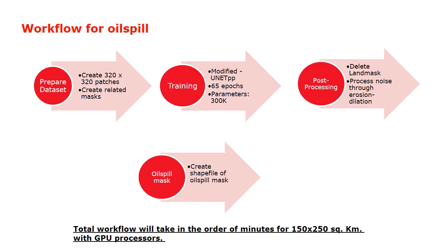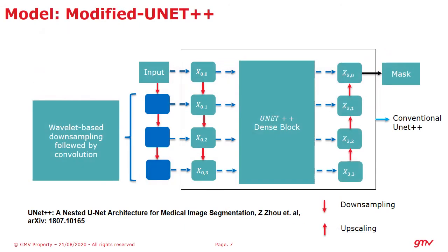Here we present our workflow for oil spill detection. The important part is that our deep learning network, which is a modified UNet++, has around three hundred thousand parameters, which is one or two orders of magnitude lower than normal deep learning networks. Due to this we have a smaller inference time when we search for oil spills in SAR images. Our modified UNet++ solution also uses wavelet-based downsampling, in addition to the usual UNet++ architecture.